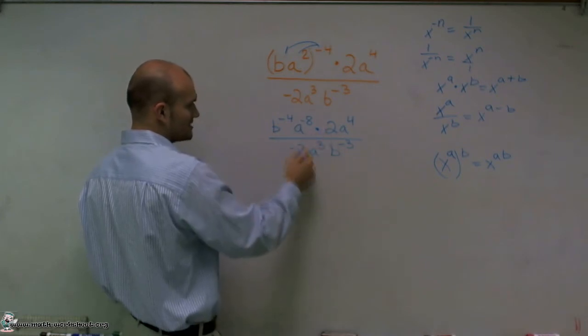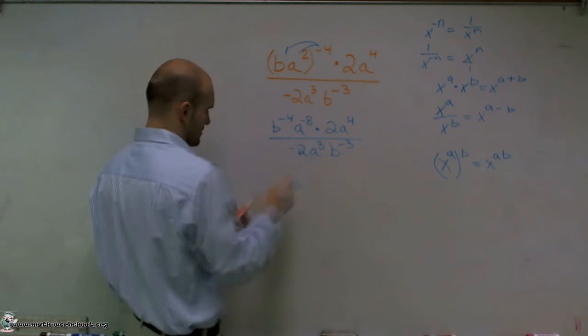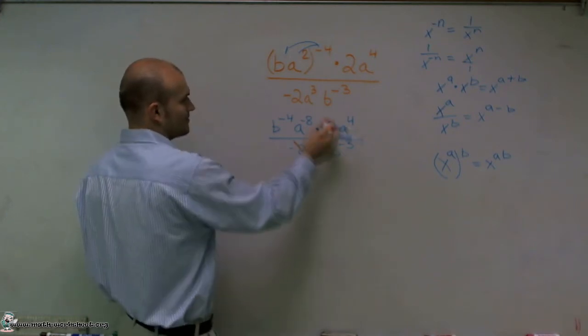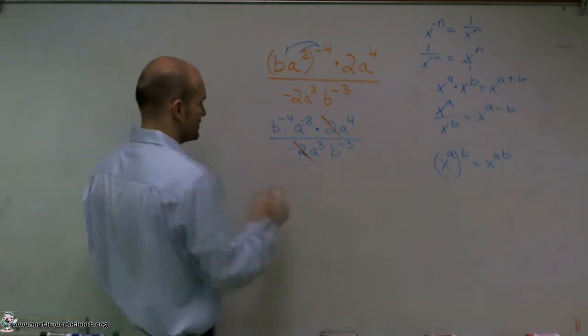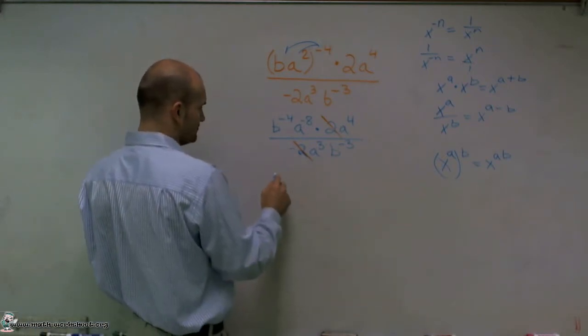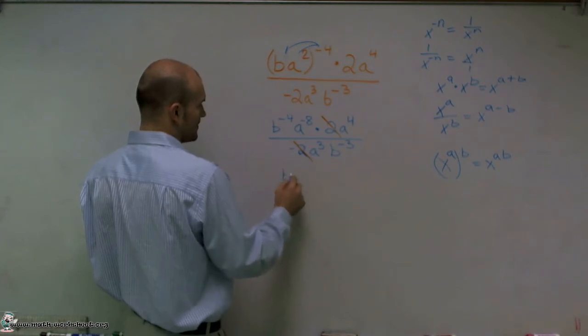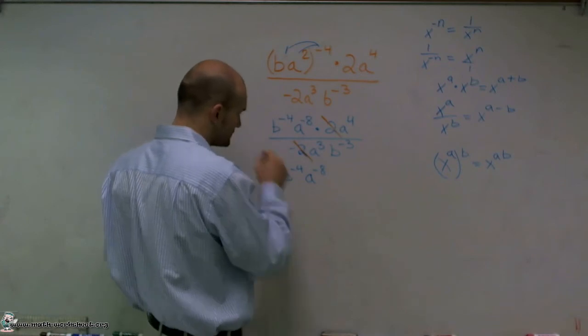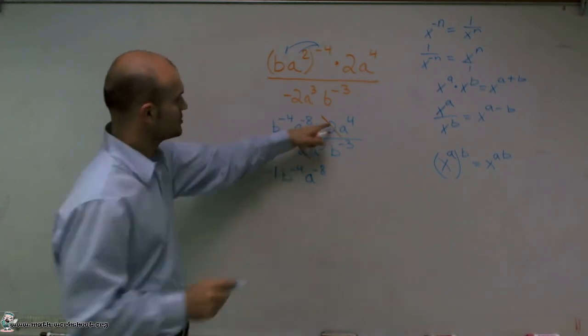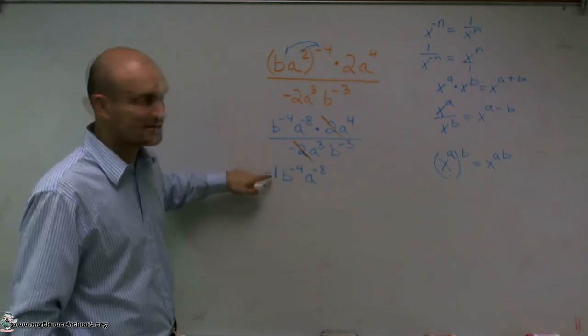But to get rid of these, I can easily just cancel these out, because that's two divided by two, which is actually going to be negative one. So I'll have B to the negative fourth, A to the negative eighth. Two divided by two is going to equal negative one. It doesn't matter if it's on the top and bottom, so I'm just going to display that right there.